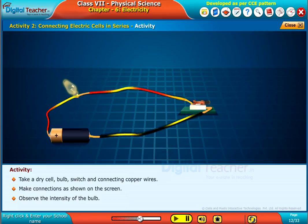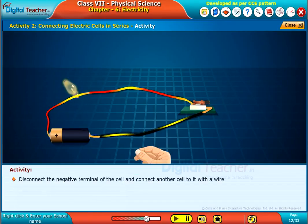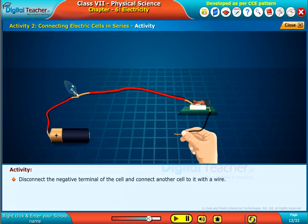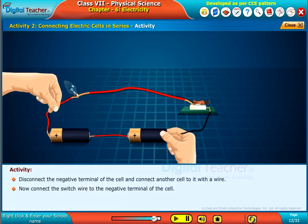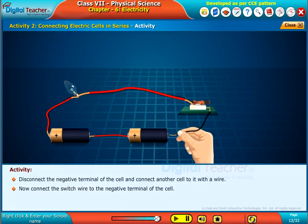Observe the intensity of the bulb. Disconnect the negative terminal of the cell and connect another cell to it with a wire. Now, connect the switch wire to the negative terminal of the cell.